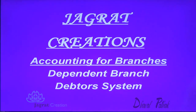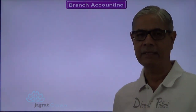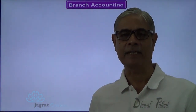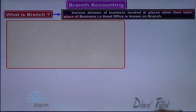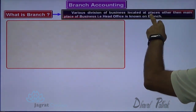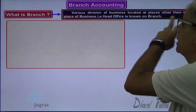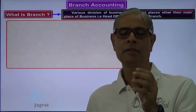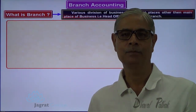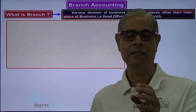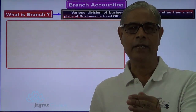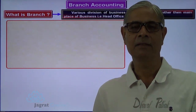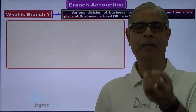Observe on the screen. Branch accounting — this is a theory lecture. The first question that arises: what is branch? Various divisions of the business located at a place other than the main place of business, that is head office, is known as branch. So branch and head office operating activity or other activity done for the business is under common ownership, but the location of activity is different than the location of the main place of business, that is head office.